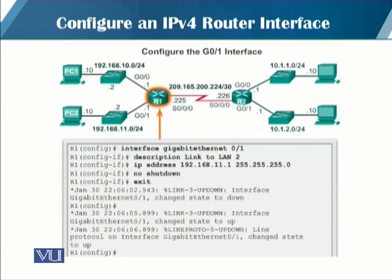To configure the other LAN interface of the router, G0/1, the first command is 'interface GigabitEthernet 0/1'. The remaining commands are the same as the previous interface — providing the IP address and subnet mask.